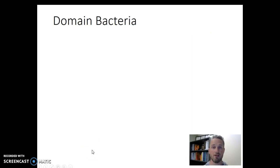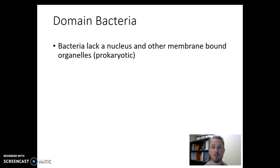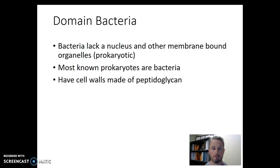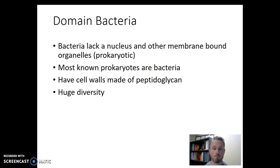The domain of bacteria includes all organisms that lack a nucleus and other membrane-bound organelles — so all bacteria are prokaryotic. Most of the prokaryotes that we know about fall into this domain of bacteria, making it a really big group of microbial organisms. Something that most of these bacteria have in common is that they mostly have cell walls made out of a chemical called peptidoglycan, which is a way that we group them together. There's a huge diversity of bacteria that we'll address as we look deeper throughout this chapter.